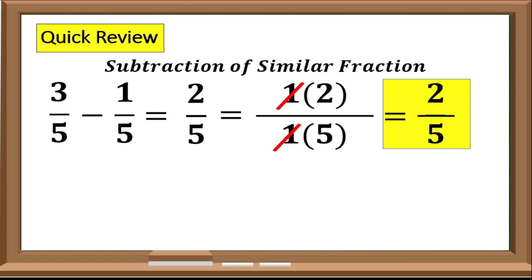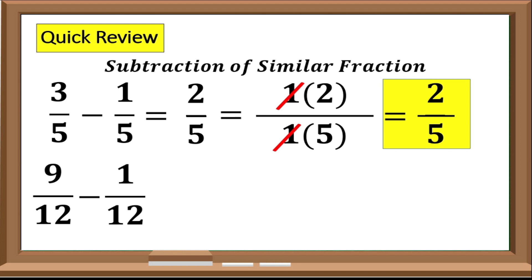Example number 2: 9 over 12 minus 1 over 12. Step 1: Ensure that all denominators are the same. In our example, they have the same denominator, which is 12. Step 2: Change the sign of the subtrahend, then proceed to addition. The sign of our subtrahend is positive, so we will change it into negative. Then the operation subtraction, we will change it into addition. So 9 plus negative 1, that is equal to 8. Then we will copy our denominator 12.